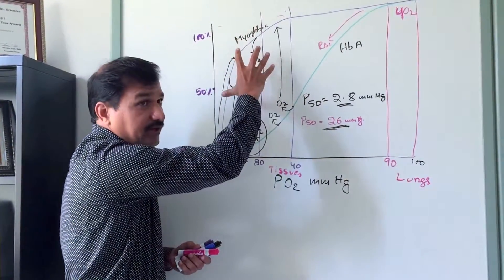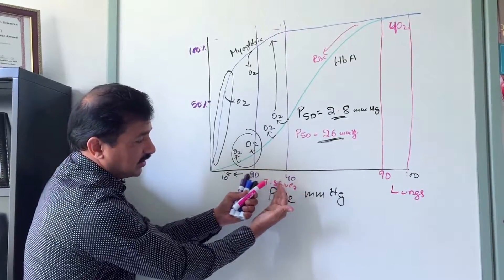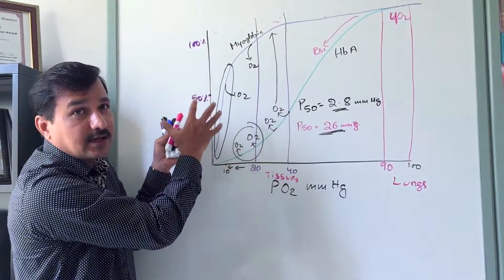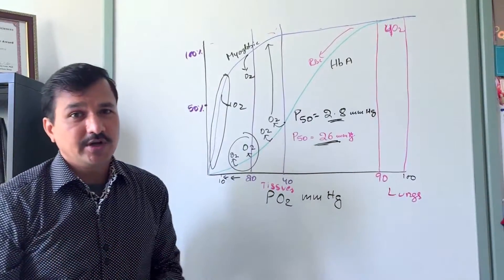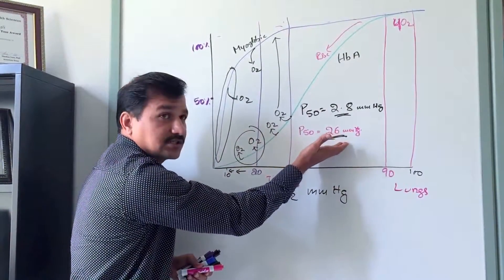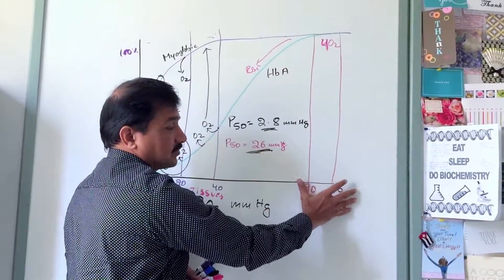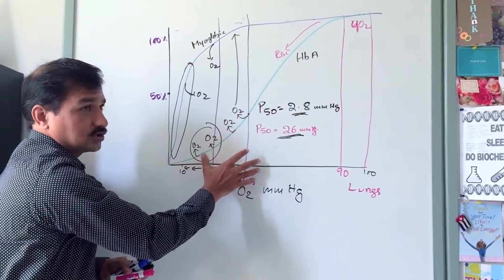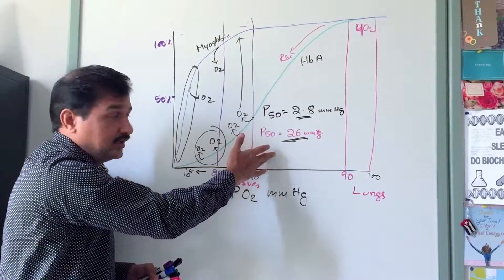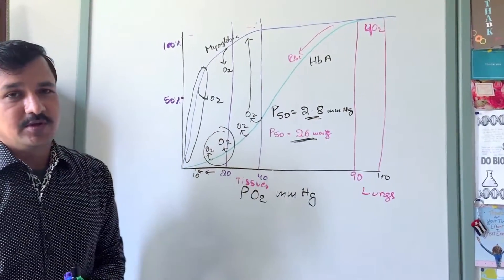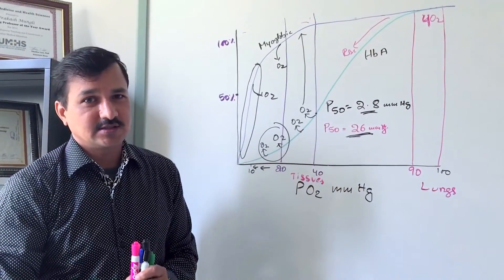Because of its high affinity, myoglobin holds on to oxygen until the partial pressure in the tissue falls low enough to trigger release, making it well-suited for oxygen storage. Hemoglobin, with its relatively lower oxygen affinity, is suited for transporting oxygen — loading up in the lungs and releasing it in peripheral tissues. Hemoglobin transports; myoglobin stores.